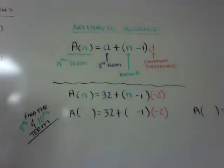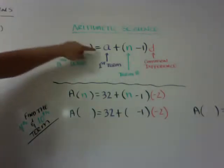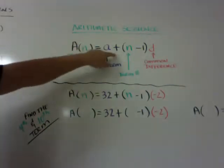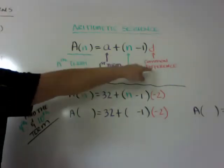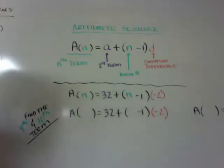So what it is is A(n) is equal to a, which is the first term, plus whatever term you're looking for, minus 1, times the common difference. I know that's kind of hard to figure out, but when you see the example, you see it's really easy.